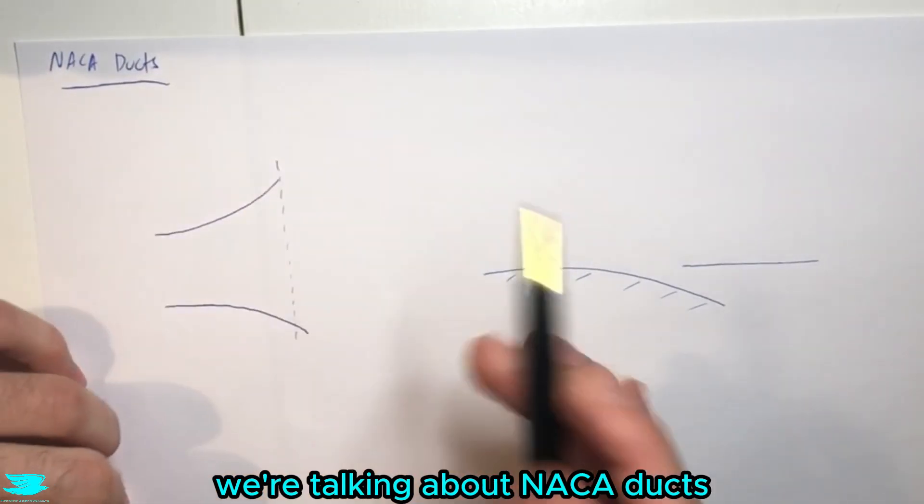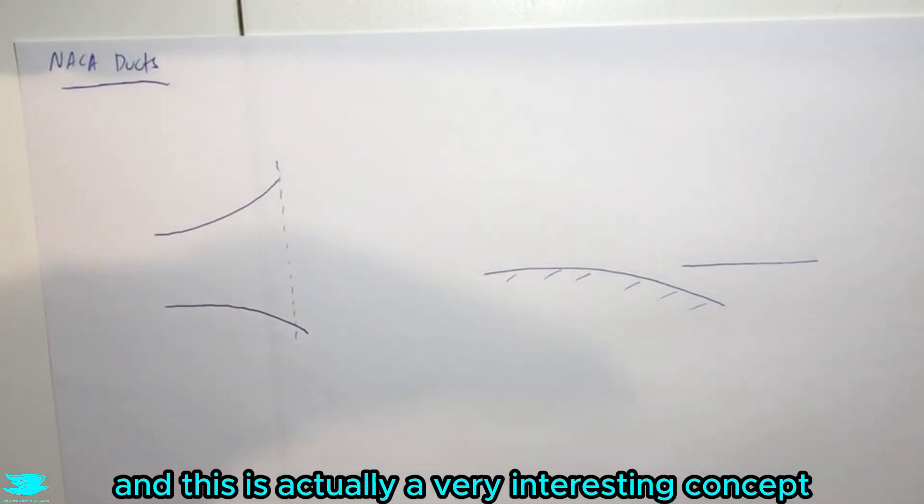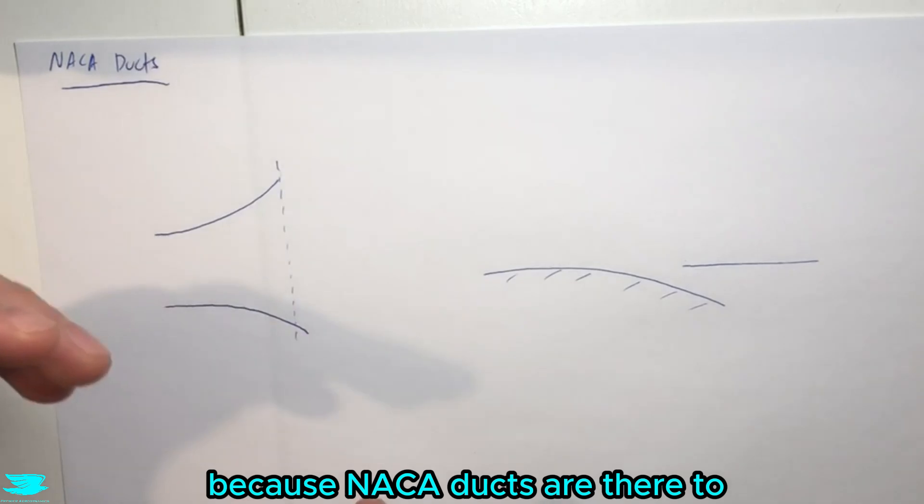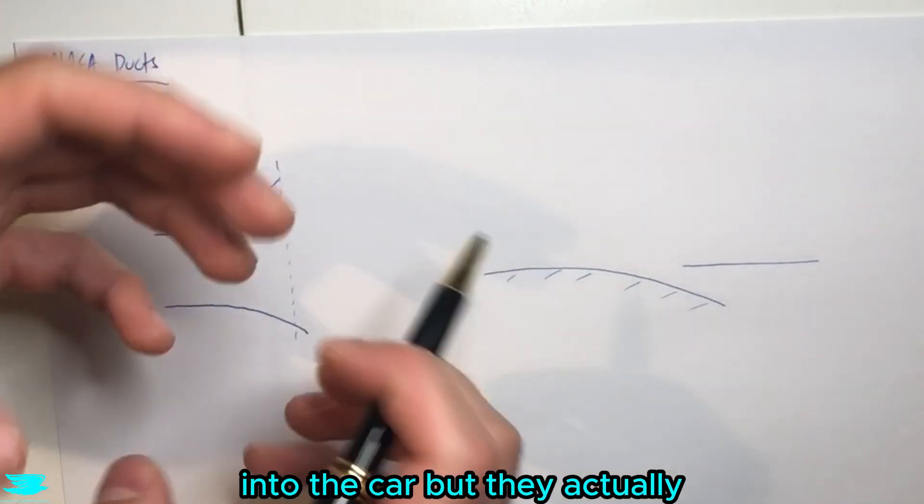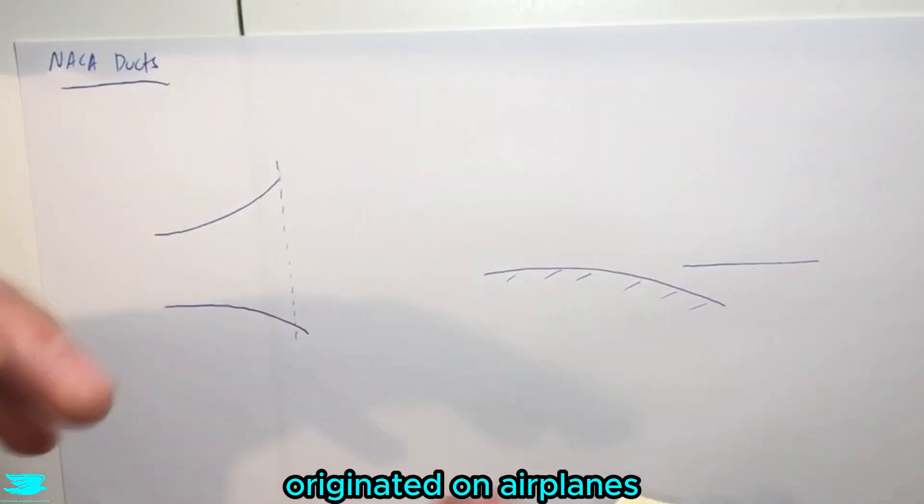What is up, amigos? Today we're talking about NACA ducts, and this is actually a very interesting concept because NACA ducts are there to bring air in from the outside into the car, but they actually originated on airplanes.